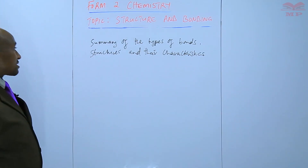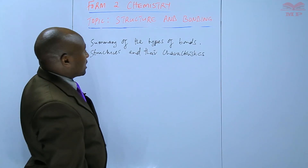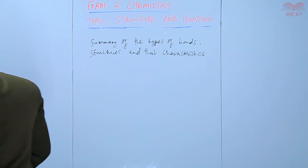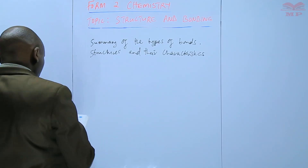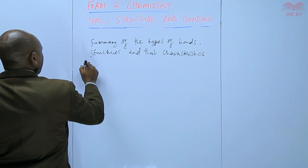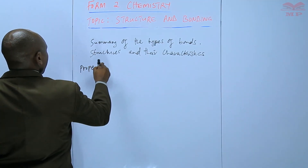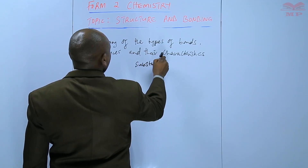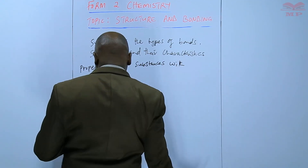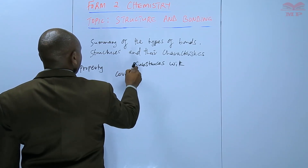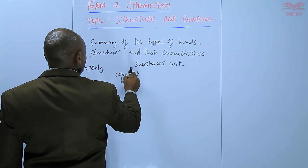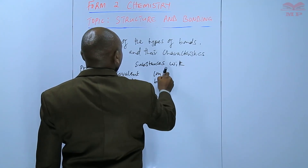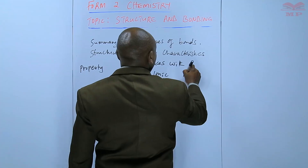Summary of the types of bonds, the structures that are formed, and their characteristics or properties. We shall put that in the form of a table. So we have the property, and then we have the substances with covalent bonds, ionic bonds, and metallic bonds.